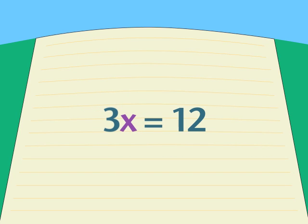So to simplify it, we'll use division. We divide both sides by a number that will remove that 3 from the x.